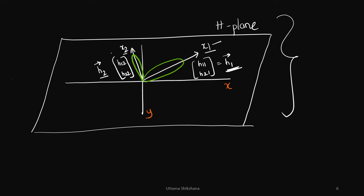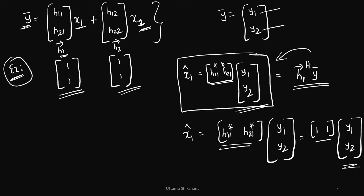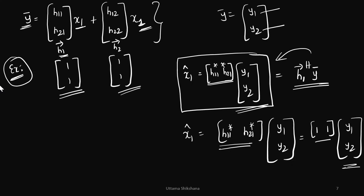As per the physical interpretation, I have transmitted x1 along the direction h1-bar. At the receiver I should look in the same direction h1-bar in order to get x1, so we can write it as x1-hat. If I substitute the values and also y1 and y2, I will get 2x1 plus 2x1, which gives 4x1. So 4 is the scaling factor — divide by 4 to recover x1. I was able to retrieve x1.